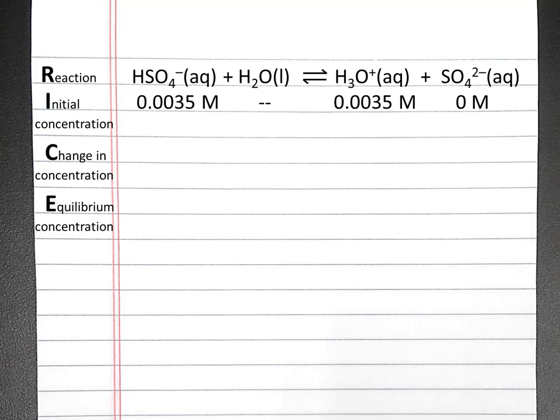The next step is to create a rice table. Our reaction goes in the first row. In the second row, we list the initial concentrations of our species. Hydrogen sulfate will be 0.0035 molar, and hydronium ions will be 0.0035 molar, because our 0.0035 molar sulfuric acid dissociated completely.